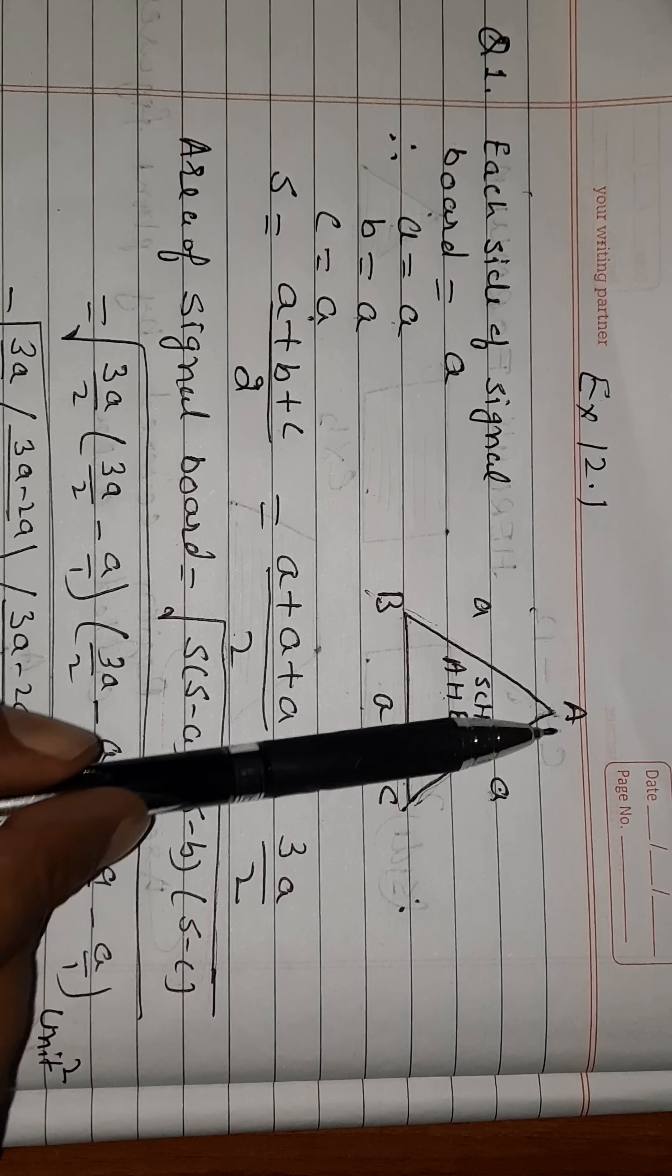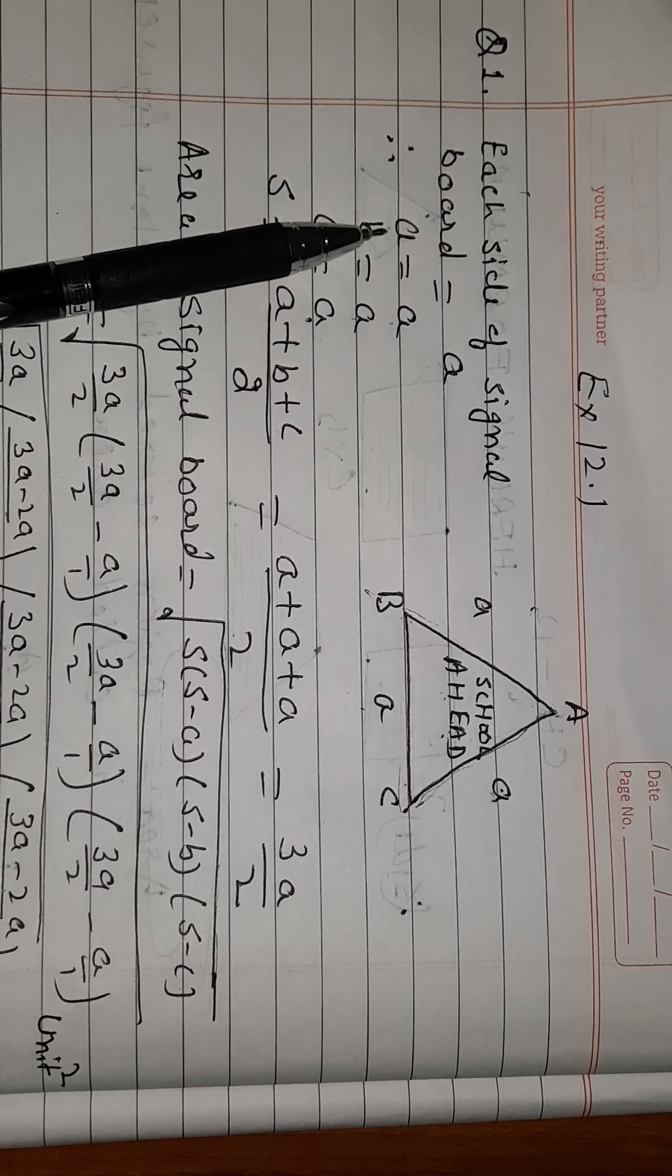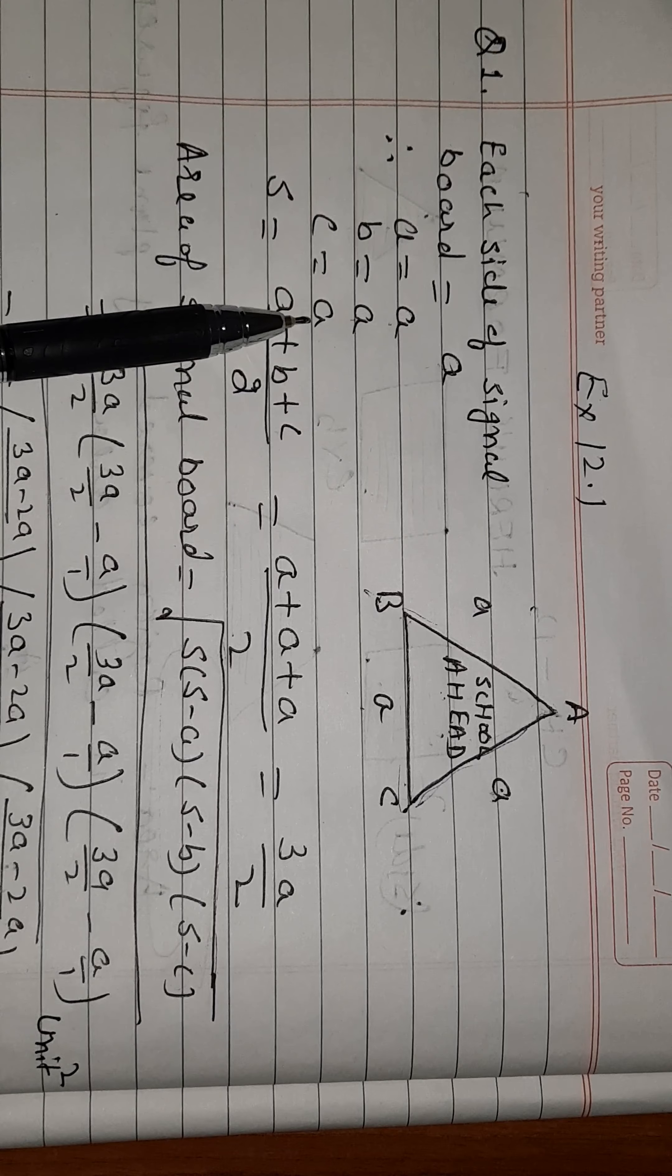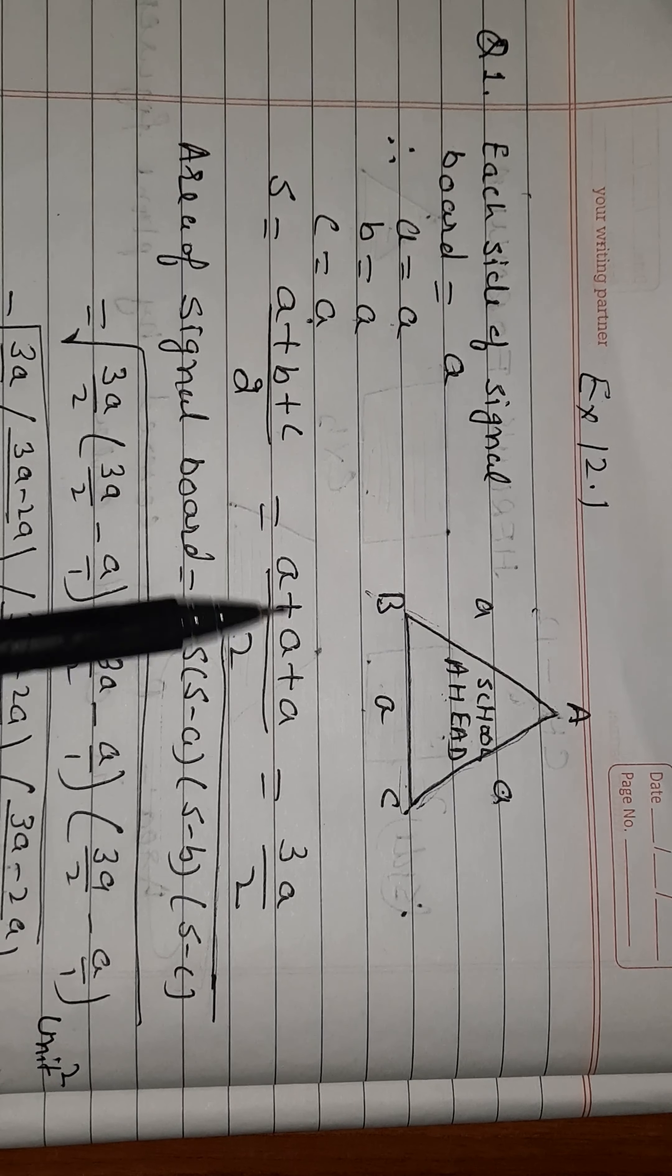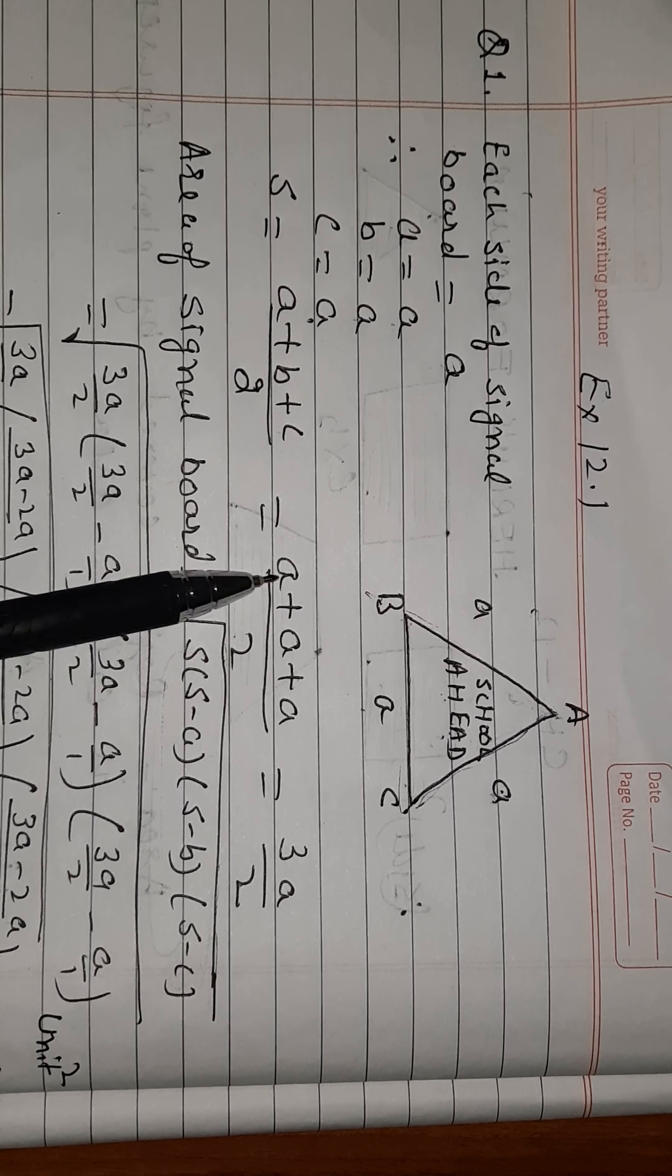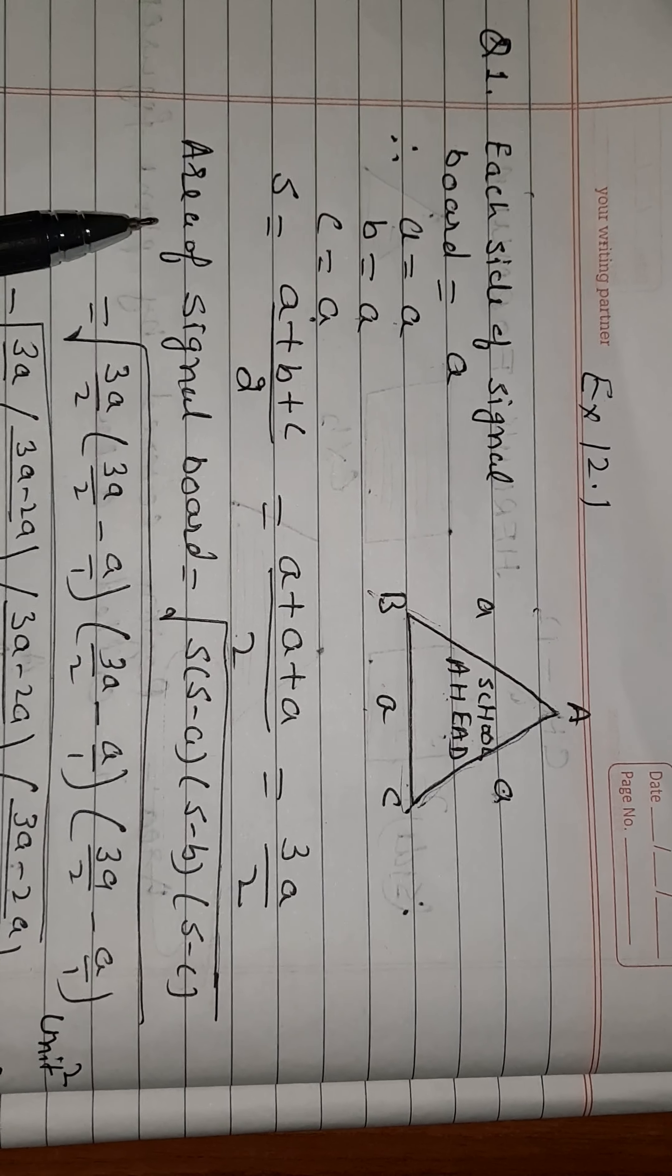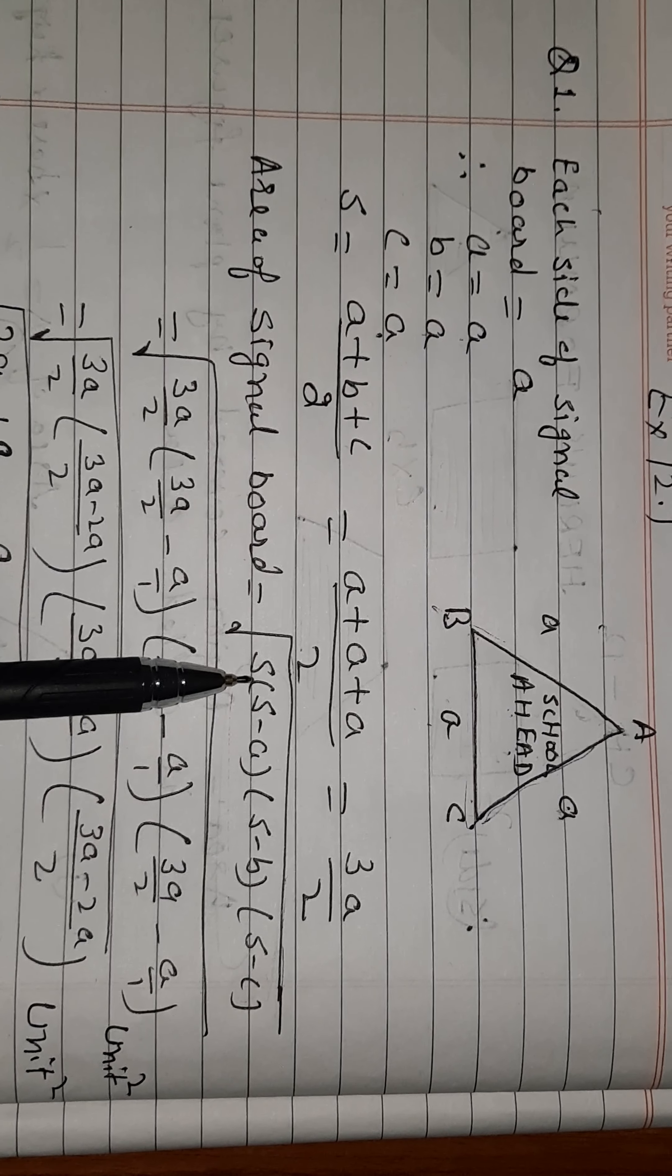This is the signal board with each side a. School ahead is written on it. Each side of the signal board is equal to a: first side equals a, second side equals a, third side equals a. Semi-perimeter s = (a + b + c)/2, which is (first side + second side + third side)/2 = 3a/2.